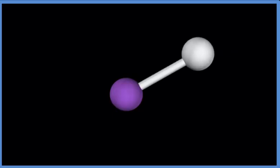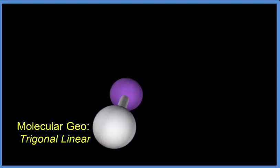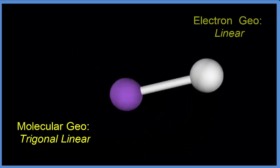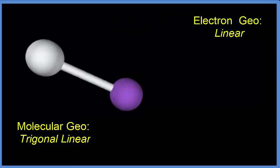We'll imagine this is our hydrogen atom here. Let's add a fluorine atom. And because it's just these two atoms, the only geometry we can have here is linear. There's really no other way that this can be arranged.